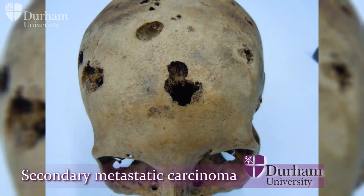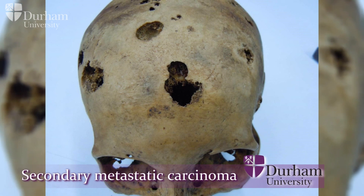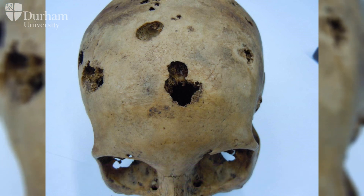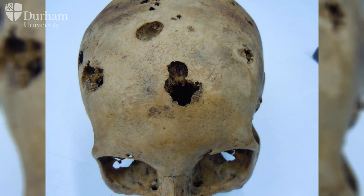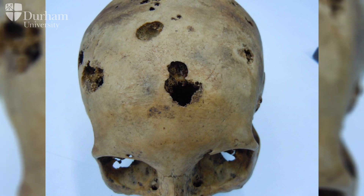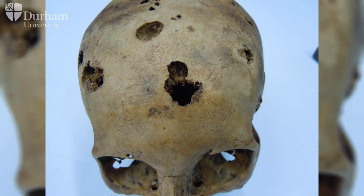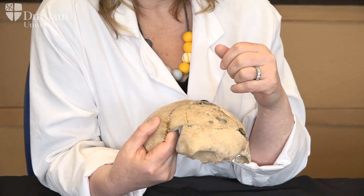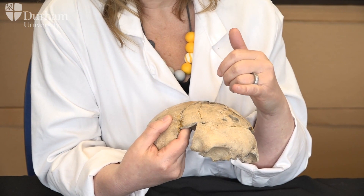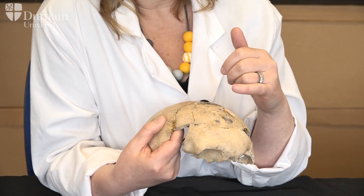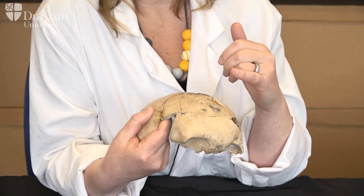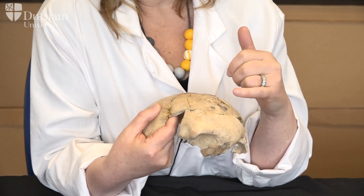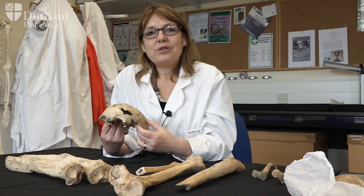In some disease processes, such as secondary metastatic carcinoma where cancer has spread from for example the liver to the bones, you'll see that the edges of the lesions are very sharp and ragged, indicating a very fast-acting disease process. When recording bone destruction it's important to record the size and location of the lesion, but also to note the margins - has there been a bony response, or are the edges very sharp?